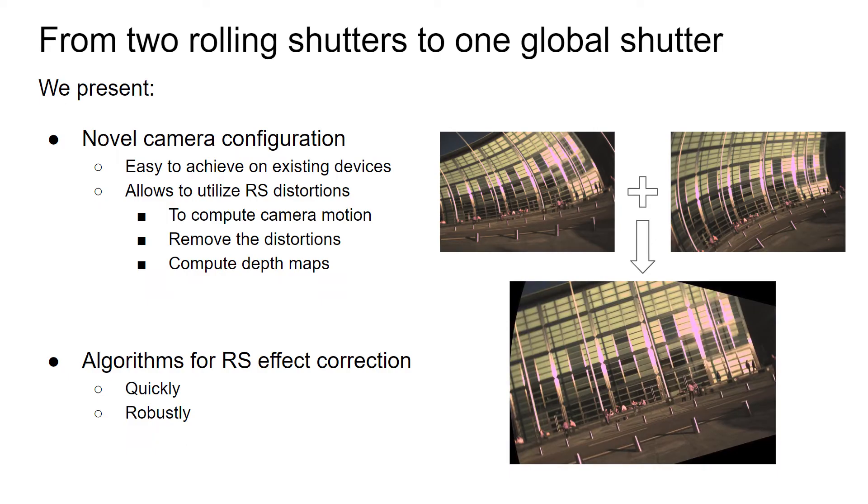In summary, we show a novel camera configuration that requires just a simple change to existing multi-camera systems. Such configuration allows to utilize the rolling shutter distortions in a way it was not possible before. Most importantly, we can compute the motion of the cameras, remove the distortions, or compute the depth of the scene. We present multiple algorithms that leverage such camera configuration and are extremely efficient and robust.